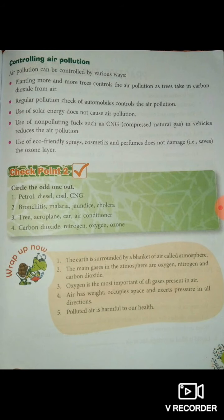Turn the page — controlling air pollution. The best way to control air pollution is by planting trees, which trap carbon dioxide during photosynthesis and give us oxygen. Automobiles should have regular pollution check-ups to ensure their engines are not releasing excess pollution. Using solar energy instead of fossil fuels will reduce air pollution.